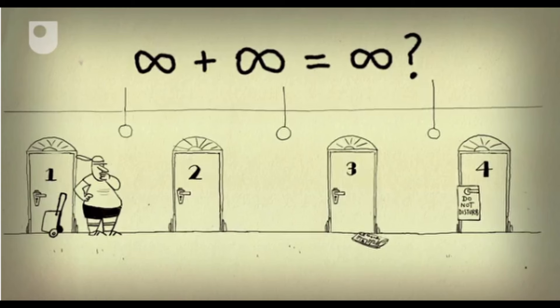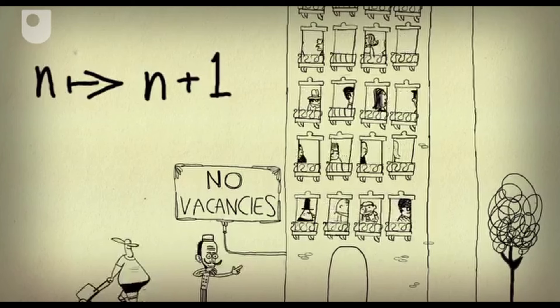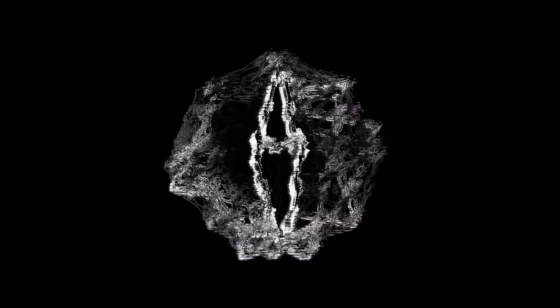Noether's theorem and gauge symmetries are closely related in theoretical physics. Emmy Noether formulated her theorem in 1918, revealing a profound link between symmetries and conservation laws. For every continuous symmetry — such as spatial translation, rotation, or time translation — there exists a corresponding conserved quantity, for example linear momentum, angular momentum, or energy. Noether's theorem applies to both classical mechanics and field theories.